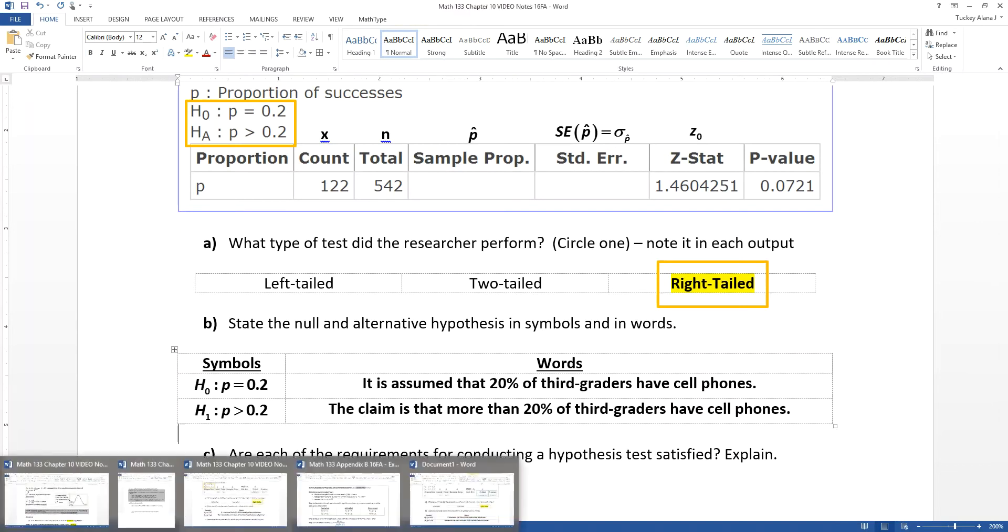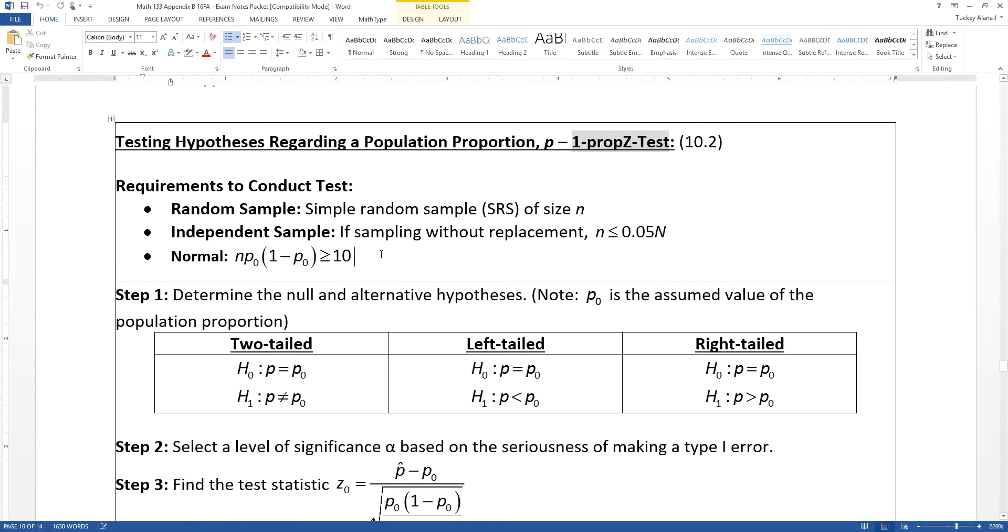Now in order to conduct a test, we have to check whether or not we met the criteria for conducting a hypothesis test for proportion, which are these three requirements. They're the same, or very similar, to the ones for making a confidence interval for proportions.